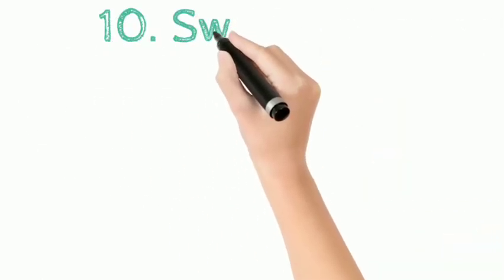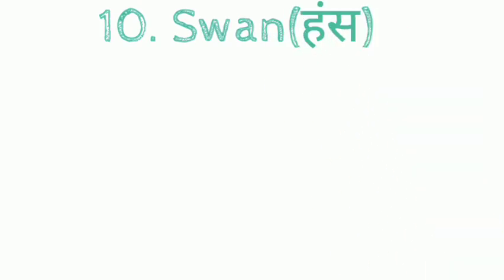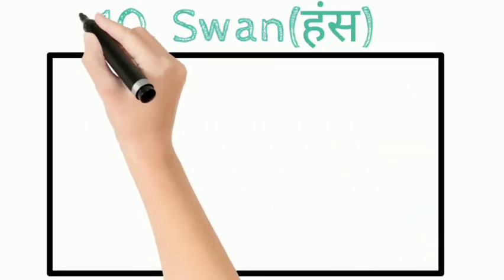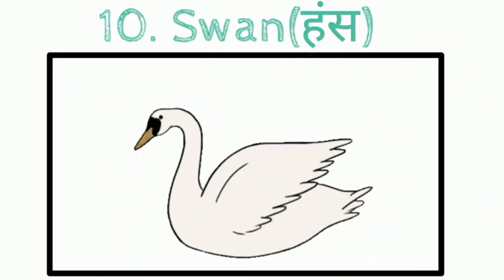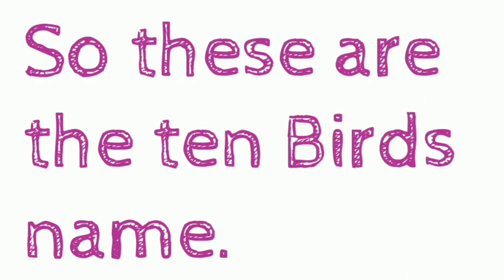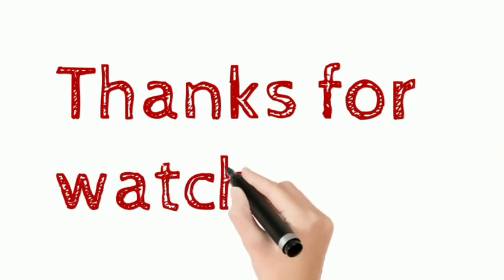Tenth: Swan, S W A N. Swan means hans. So these are the 10 birds names. Thanks for watching.